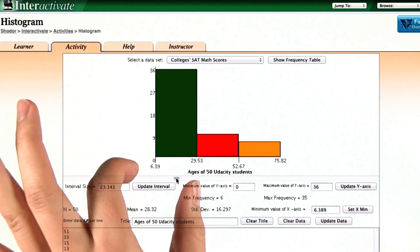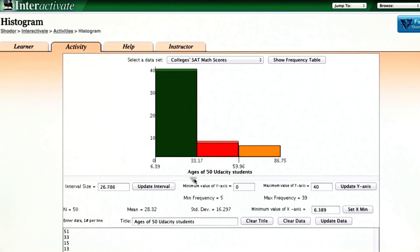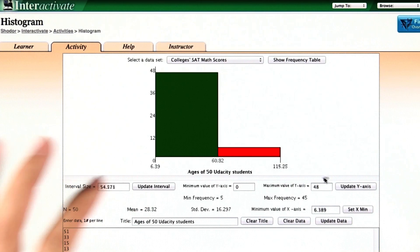So here the bin size is about 23. And if we keep going, of course, eventually we get way too much data in each bin, and the shape of the histogram isn't even recognizable.